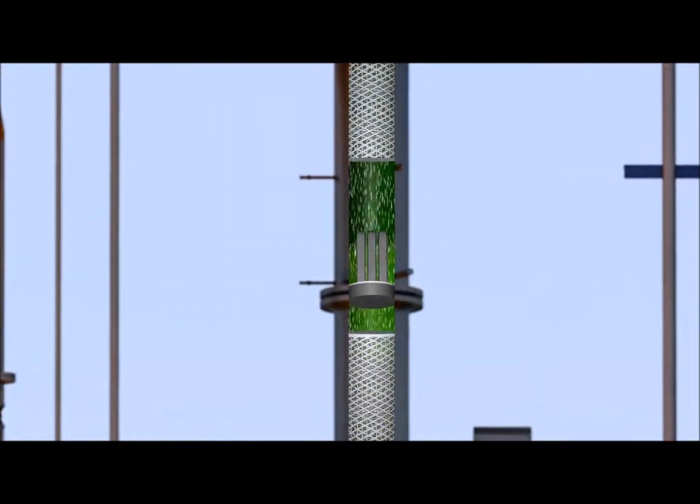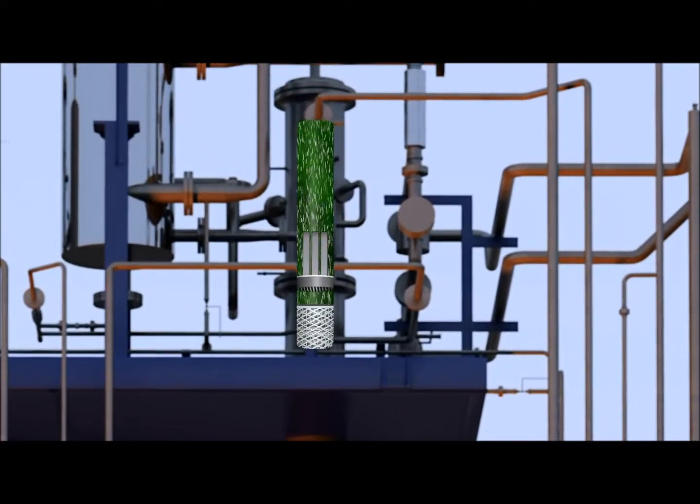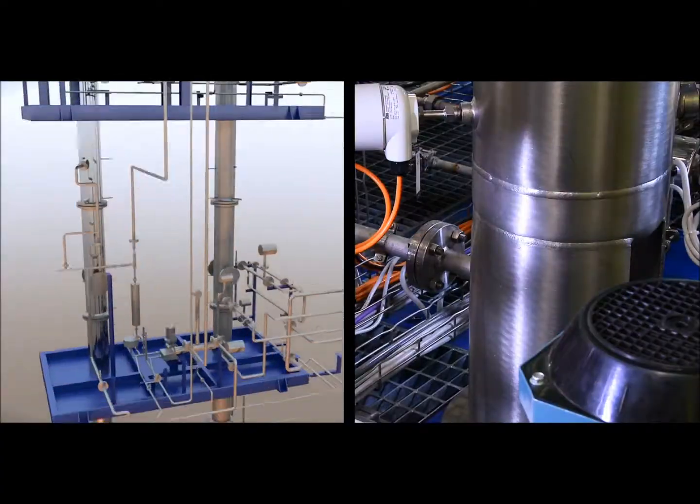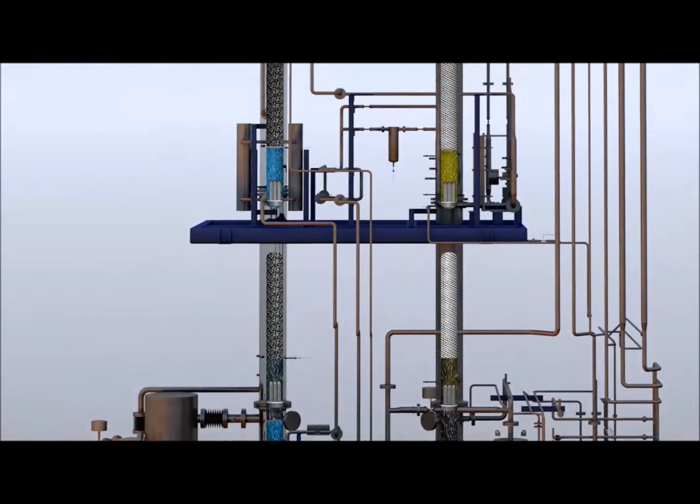By the time the gas stream reaches the top of the column, the CO2 has completely reacted with the MEA. The now CO2 rich amine solution is collected from here and is pumped up to the top of the stripper tower.